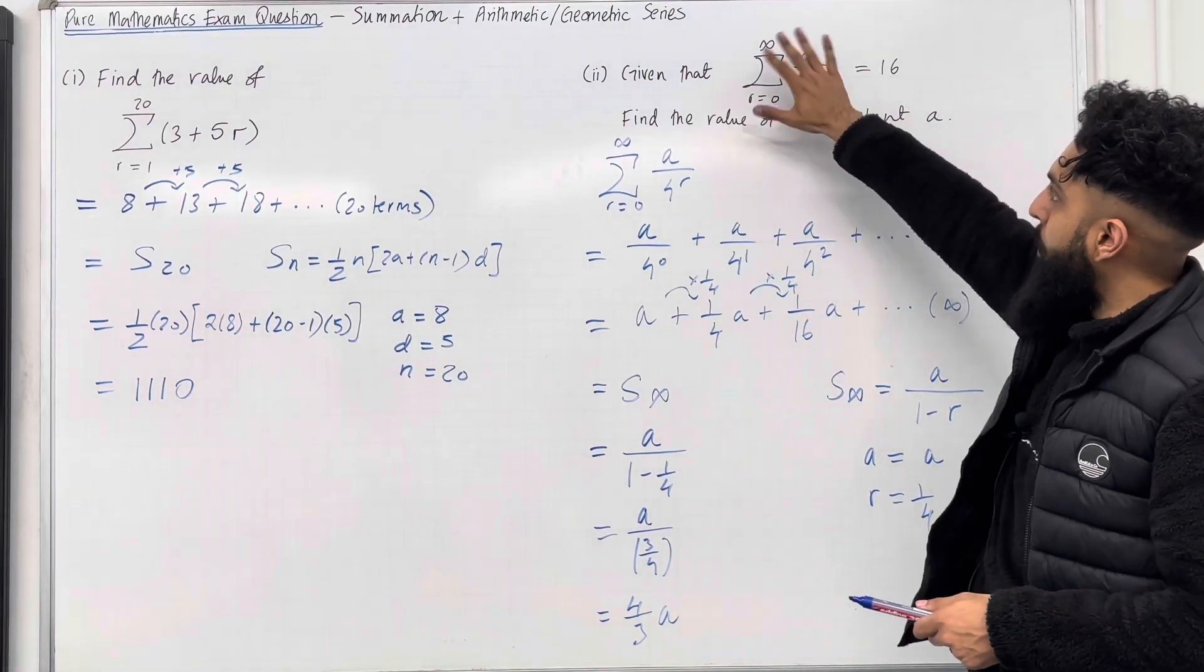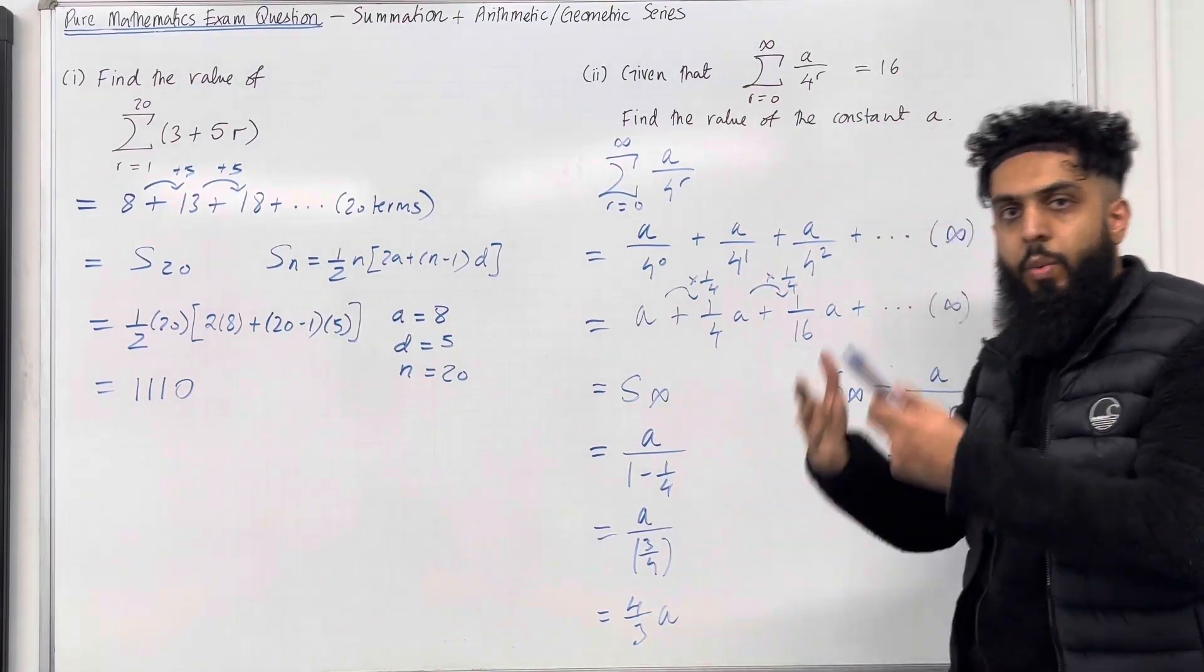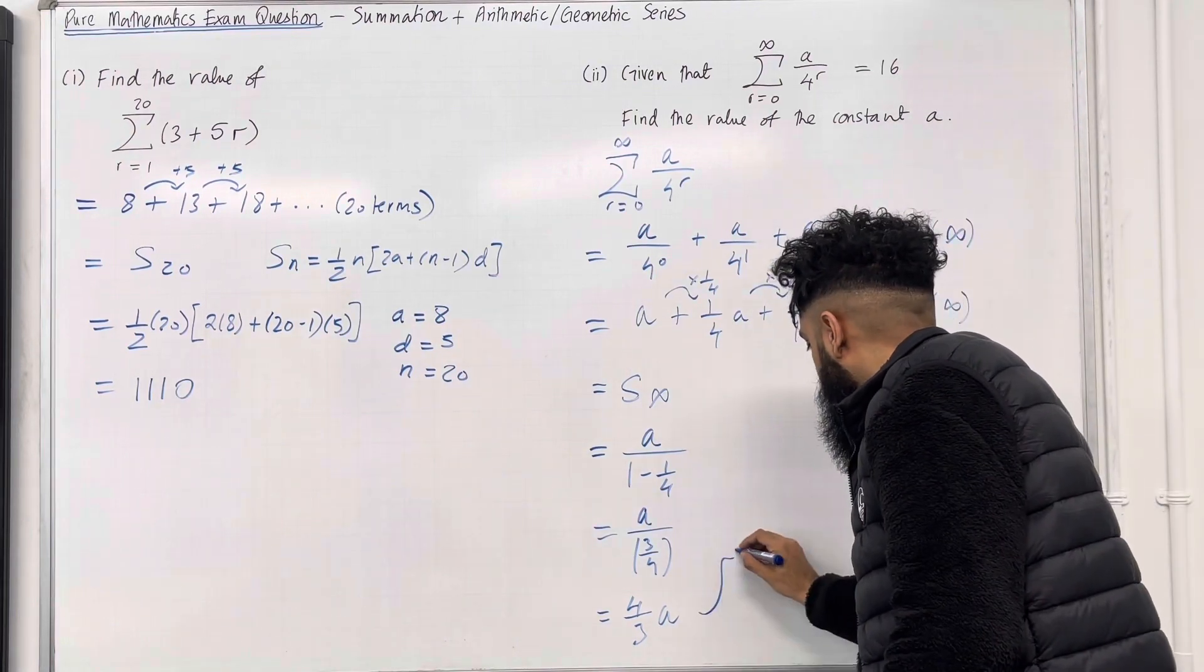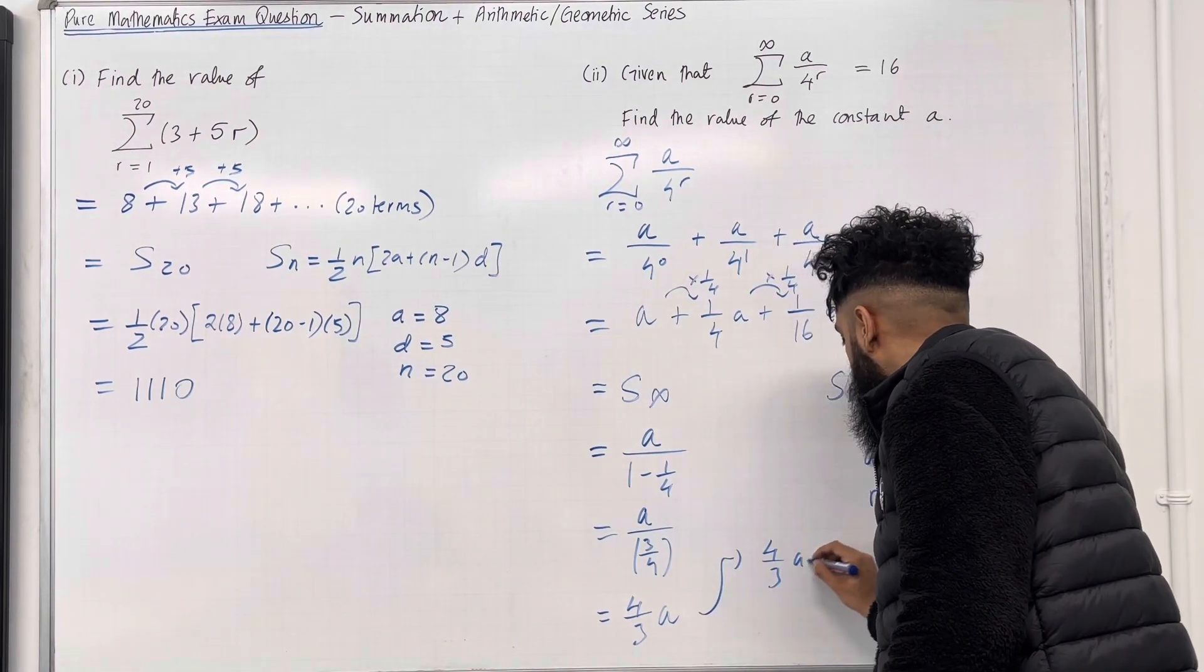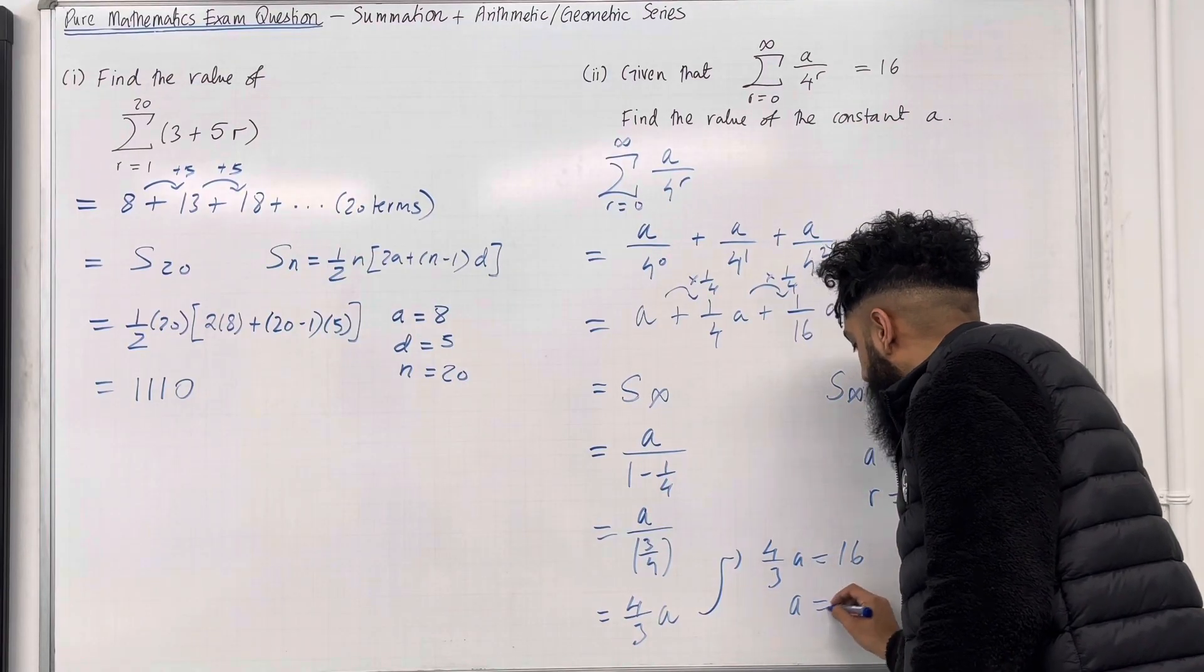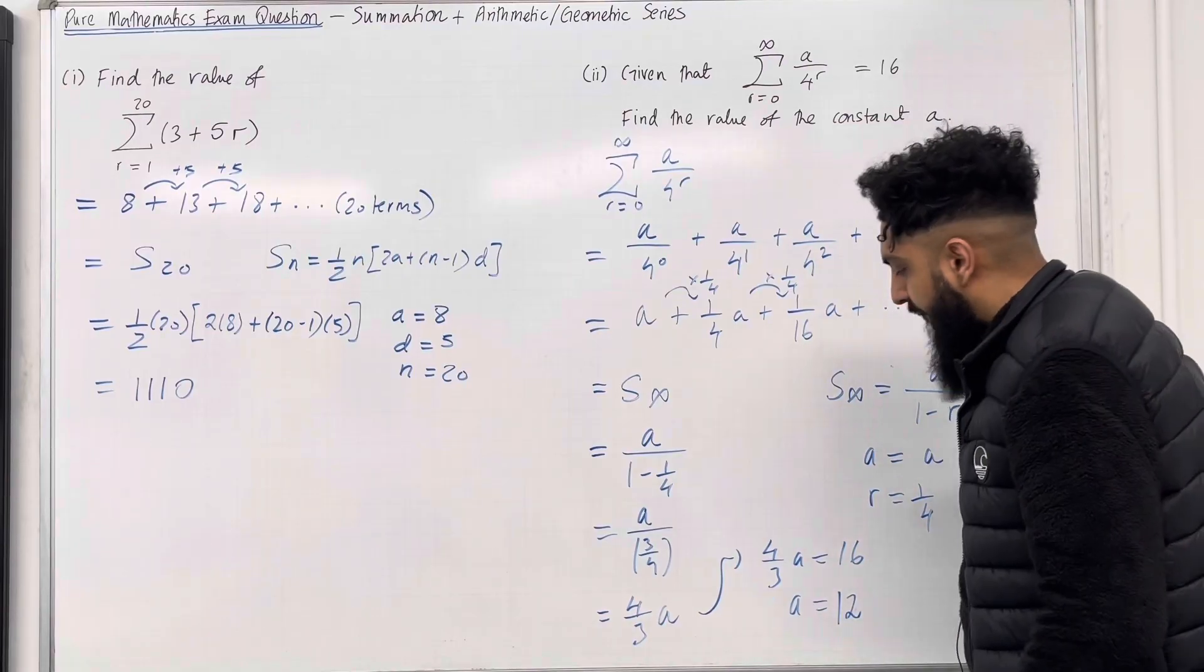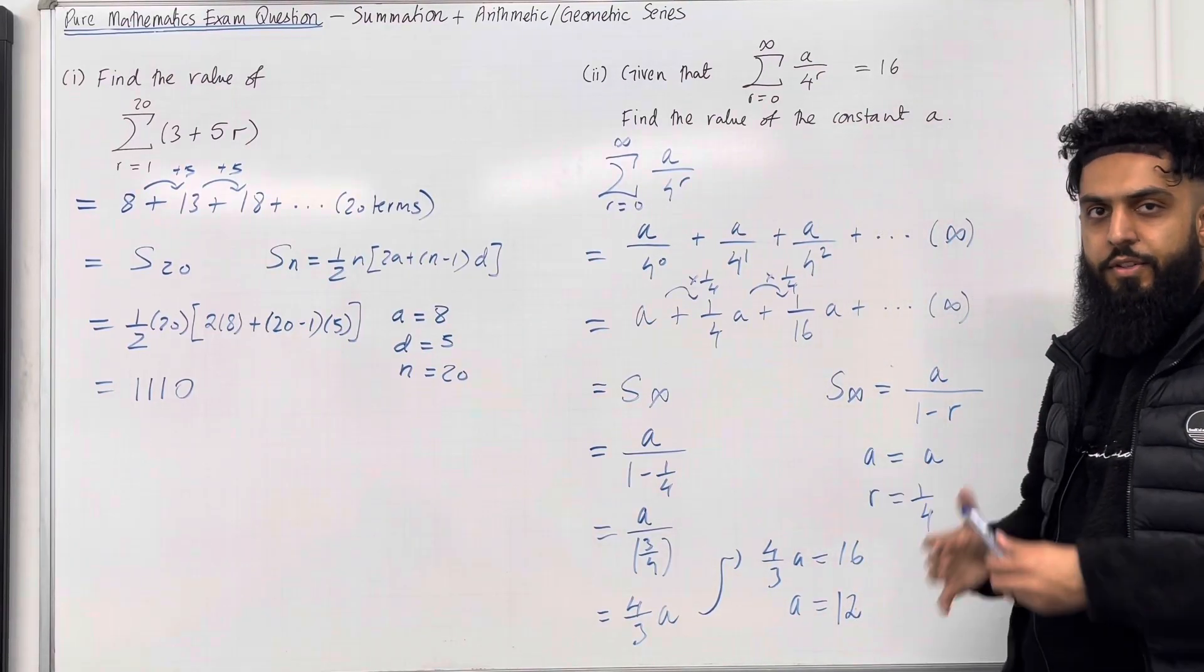Right, so this summation is 4 over 3a. We can set 4 over 3a equal to 16. So we've got 4 over 3a is equal to 16. And so to calculate a, we do 16 divided by 4 over 3, which is 12. So the value of the constant a is 12.